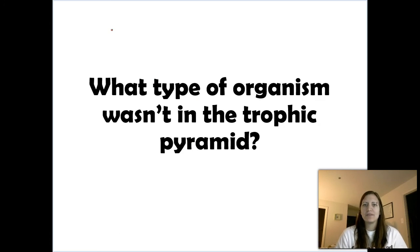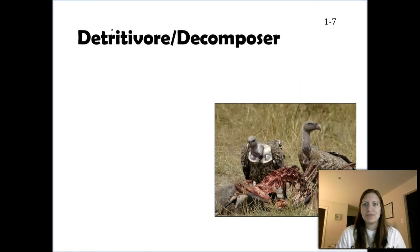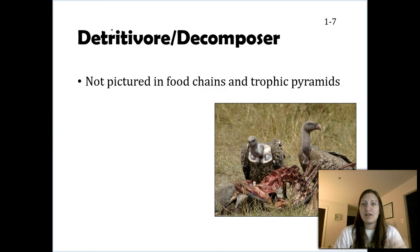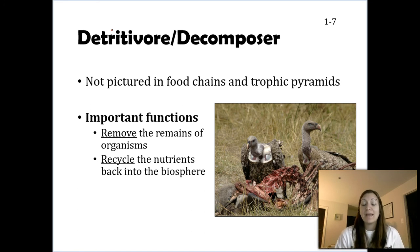So thinking about the organisms, we actually didn't mention someone. We talked about our producers and photosynthesis. We talked about our consumers. But we kind of left someone out. We left out these guys, our decomposers. We talked about them earlier. We know they're really important. But we didn't see them in a food chain or trophic pyramid. You're never ever going to see a picture of a vulture in there at all. The reason is, is because they only eat dead things. But a food chain is representing live interactions.